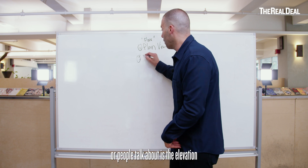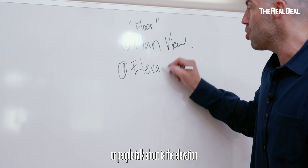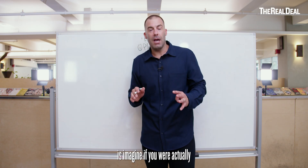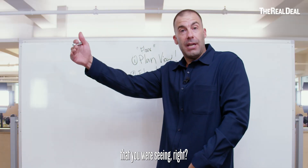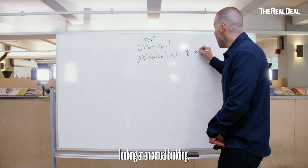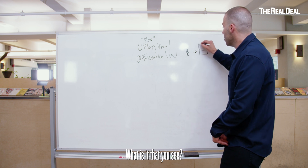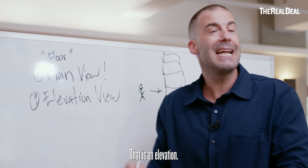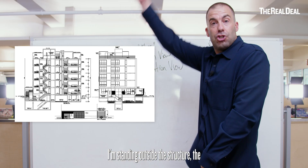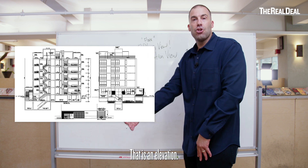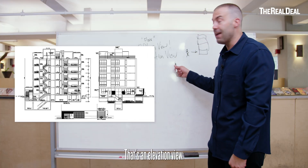The next view that people talk about is the elevation view. What is an elevation? An elevation is — imagine you were a human standing, looking at the actual space. So if you were here — we'll call that EB — looking at an actual building, what is it that you see? You see the floors of the building, the facade, the doors, the windows, the bricks. That is an elevation. I'm standing outside the structure — the kitchen, the bathroom is staring in front of me. What we see in front of us — that's an elevation view.